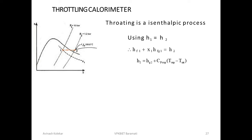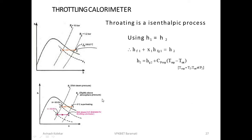This is a simple method to find x1 — using the isenthalpic throttling process, you can determine the dryness fraction of the steam. If there are any doubts, you can message. Now let us see the limitations of the throttling calorimeter.